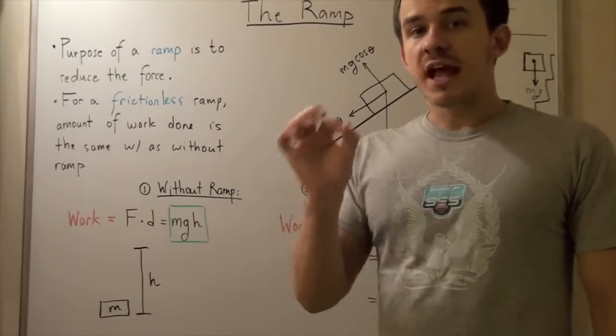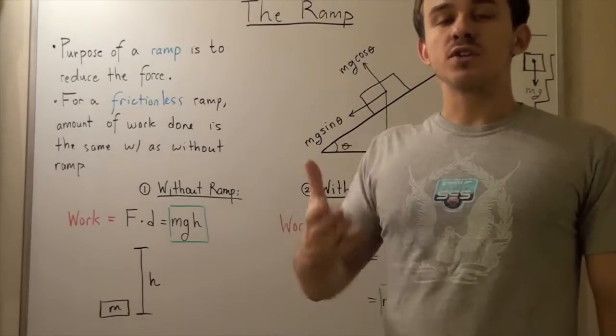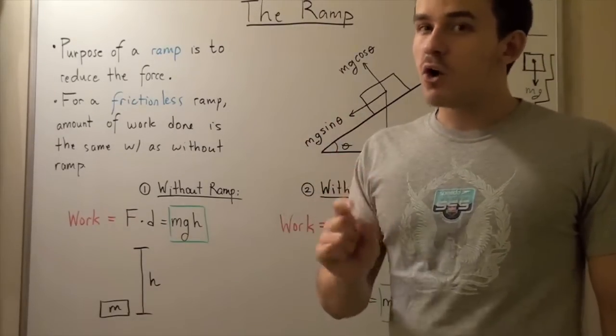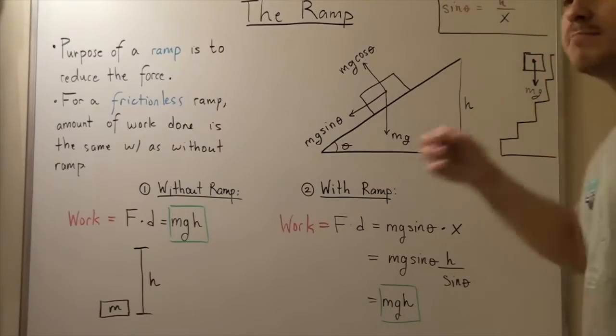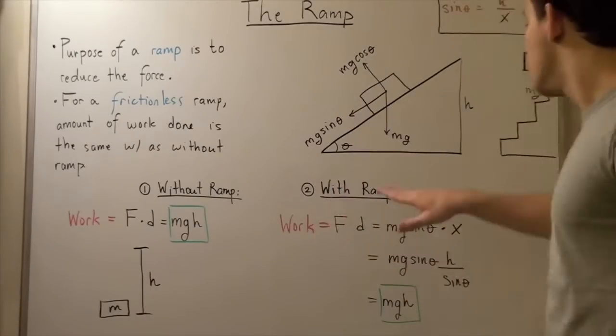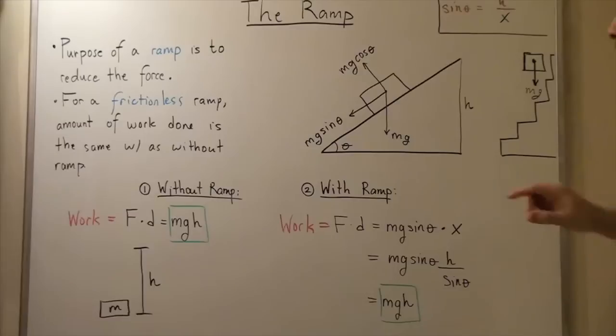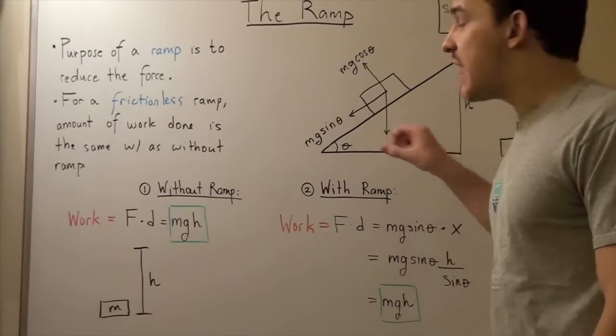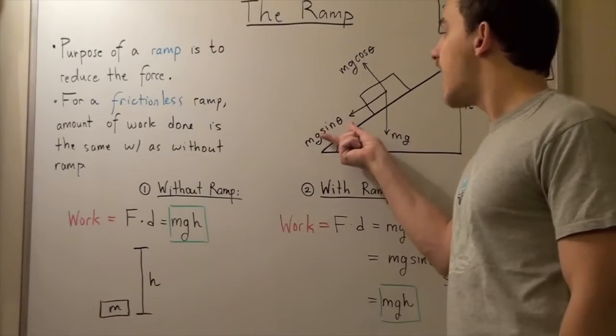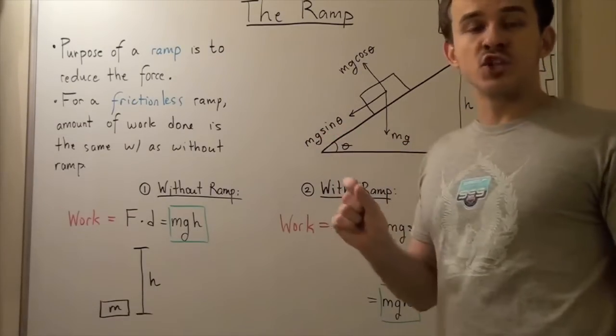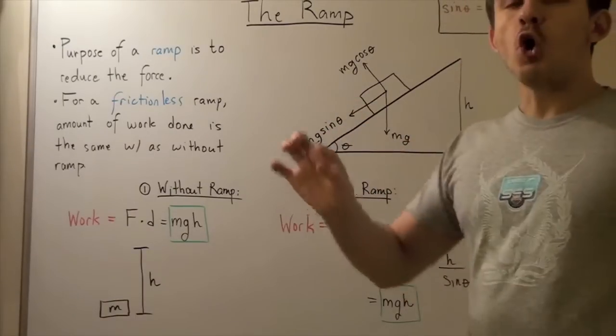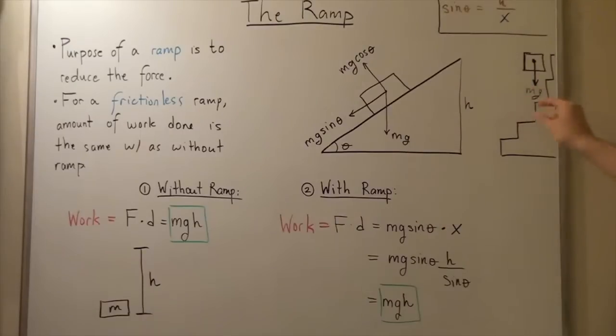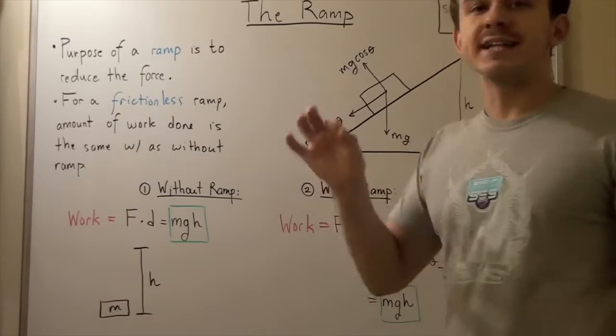So the only force that you will feel is the force of gravity, but now the force of gravity isn't m times g, because the force vector does not make a ninety degree angle to the horizontal. Now there's an angle theta, and that means you will have this sine theta term right next to your mg, and mg sine theta is always less than mg as long as theta is less than ninety.